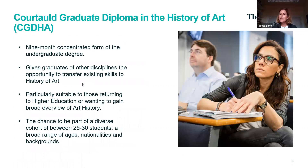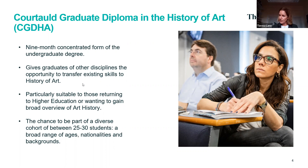In a nutshell, the Courtauld Graduate Diploma in the History of Art is a nine-month course — essentially a concentrated form of the three-year undergraduate degree. Similar to a law conversion degree that conflates a law degree into one year, the graduate diploma operates in the same way in art history, offering graduates from other disciplines a fast-track, immersive year transferring their existing skills into the world of history of art.